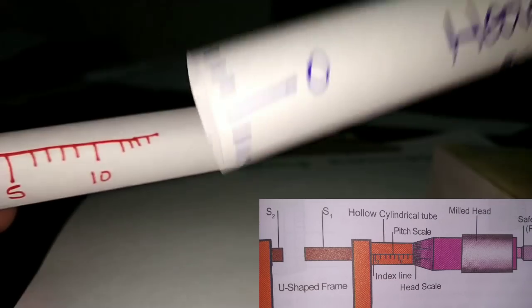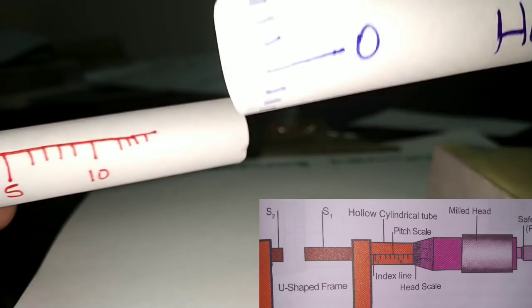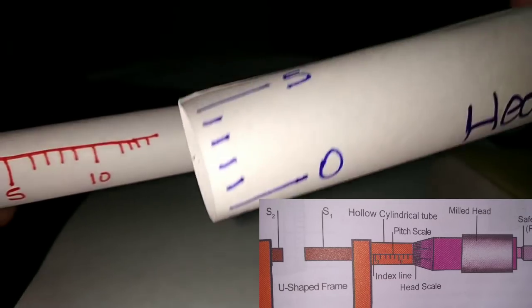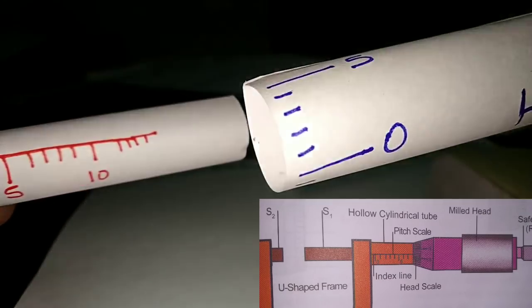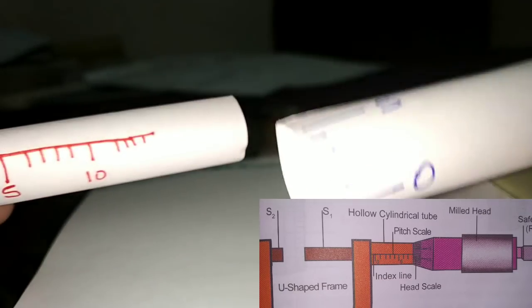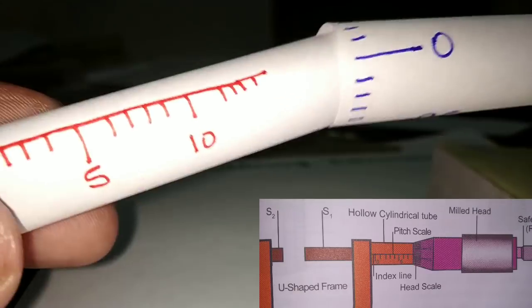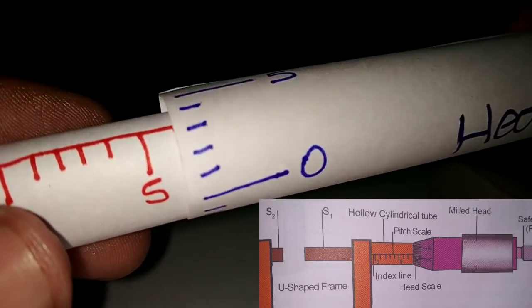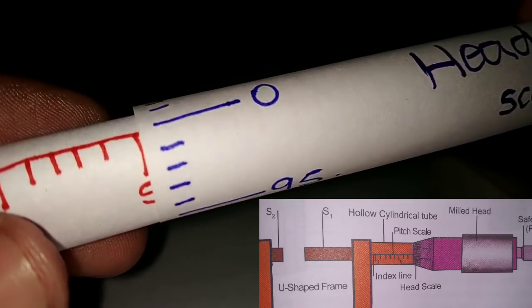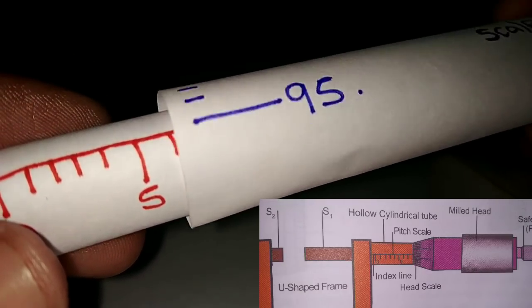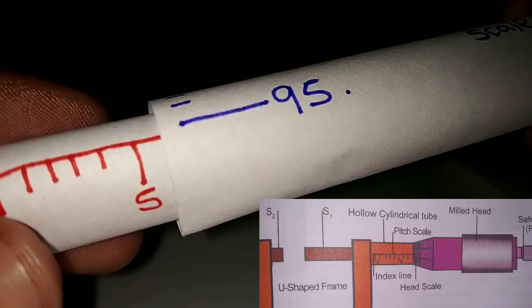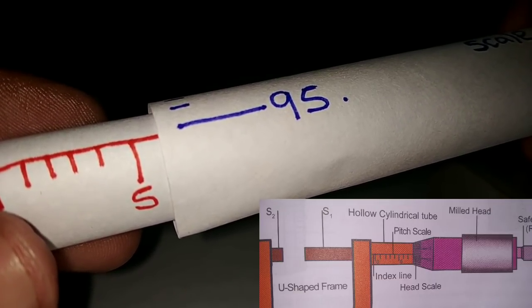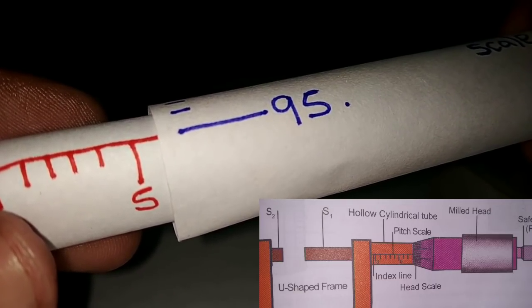If we look at two divisions, it is 0.5 division — that is 0.50, so it is 0.5. If we look at the point, it is 5. If we look at the rotation, it is 95. So how do we say it? 5.95mm.